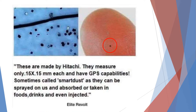Here is an example of a micro product — a GPS developed by Hitachi, measuring around 0.15 x 0.15 mm. It is very small; if you put it on a finger, it is just like a dot or a mole. Sometimes it is also called smart dust because it can be sprayed on us, absorbed or taken in food or drinks, and even injected. This shows how small the products produced via micro engineering technology are, and why the environment must be very carefully controlled, as the product cannot be mixed with dust or other particles.